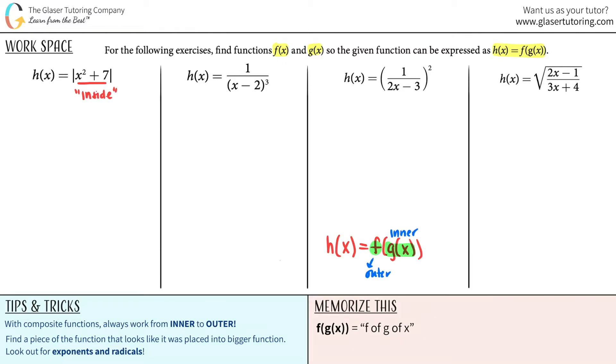That's the hardest part, finding what is inside something else. Once you found that out, that's your inner function. And they told us that the inner function was g of x. So g of x equals whatever you said was trapped inside, x squared plus 7.